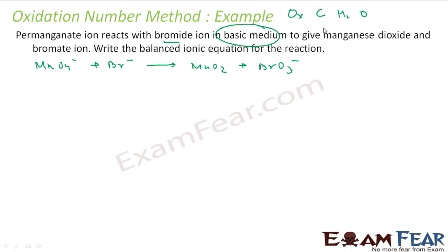We will first balance oxidation numbers. Applying the oxidation number formula: oxygen is minus 2. For MnO₄⁻, x minus 2×4 equals minus 1, so x equals plus 7. For MnO₂, x minus 2×2 equals 0, so x equals plus 4. For Br⁻, oxidation state is minus 1. For BrO₃⁻, x minus 2×3 equals minus 1, so x equals plus 5.